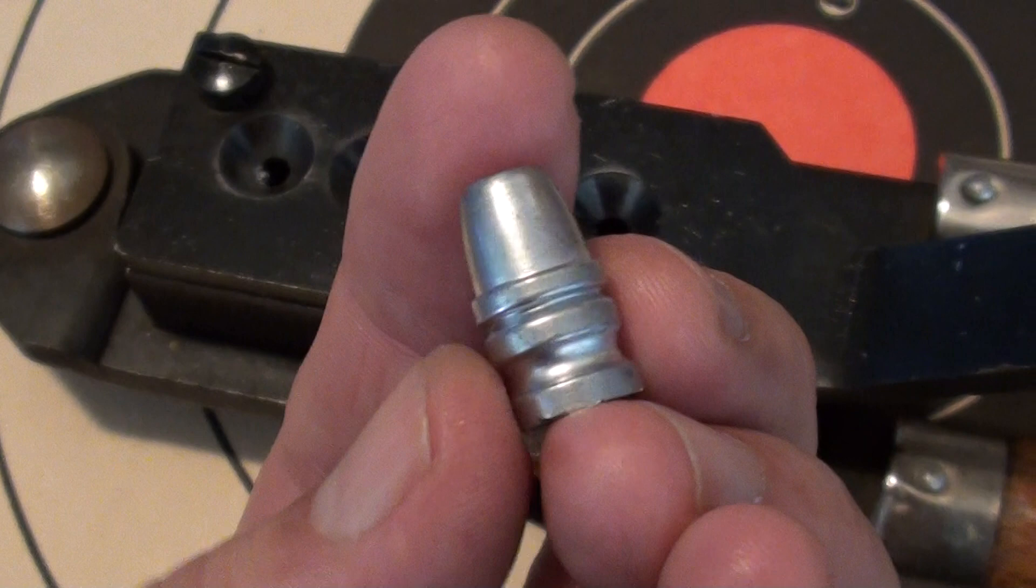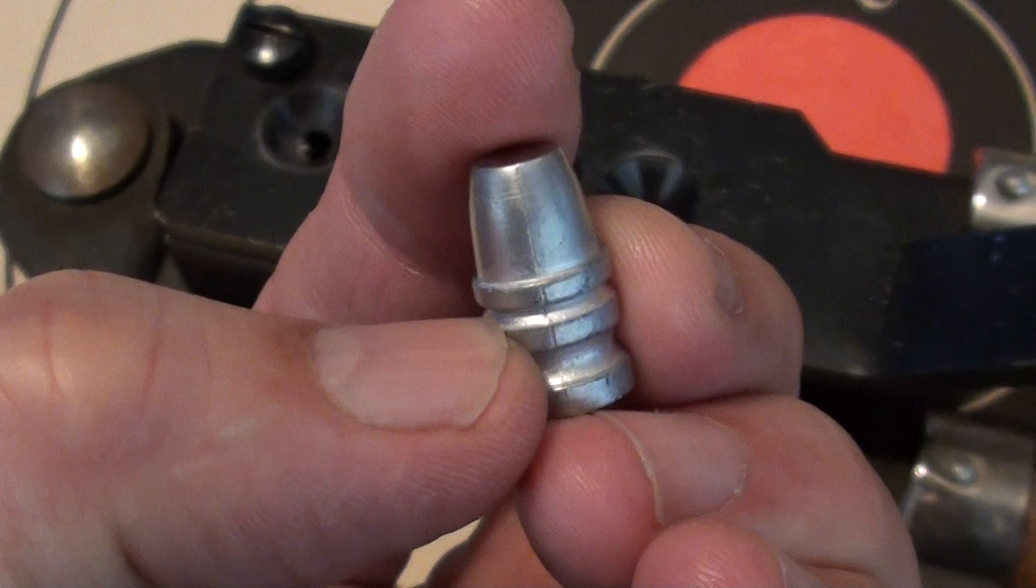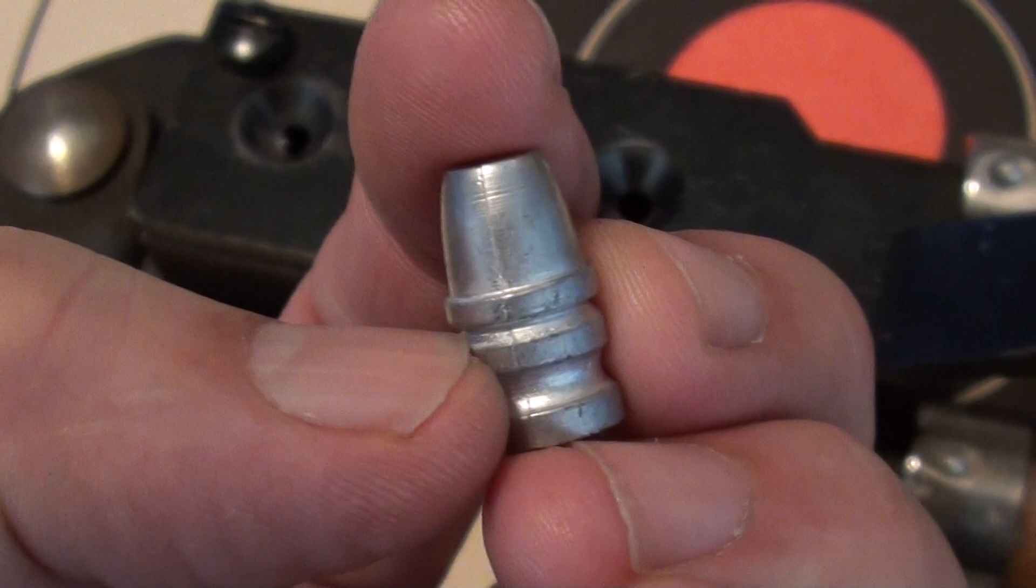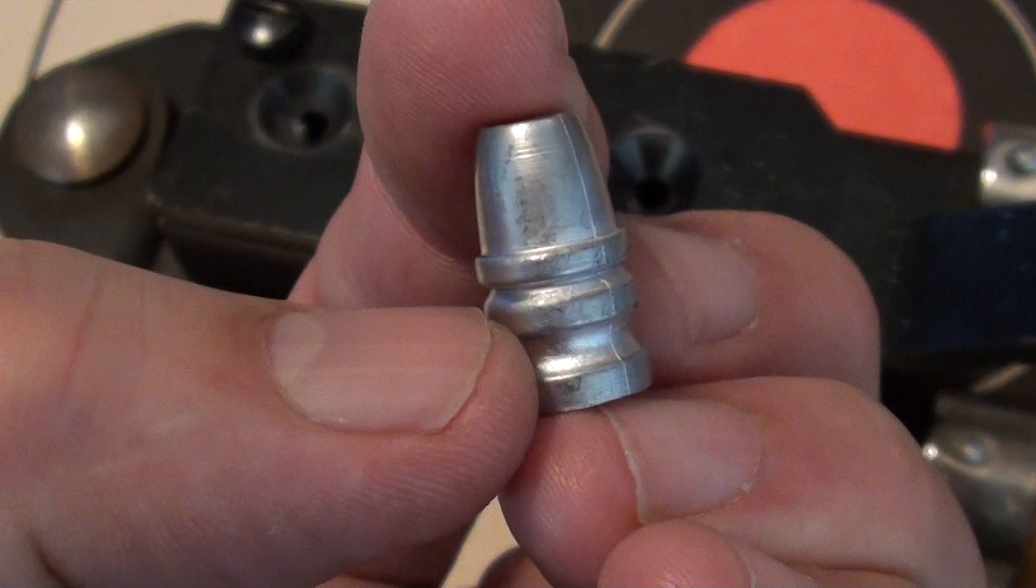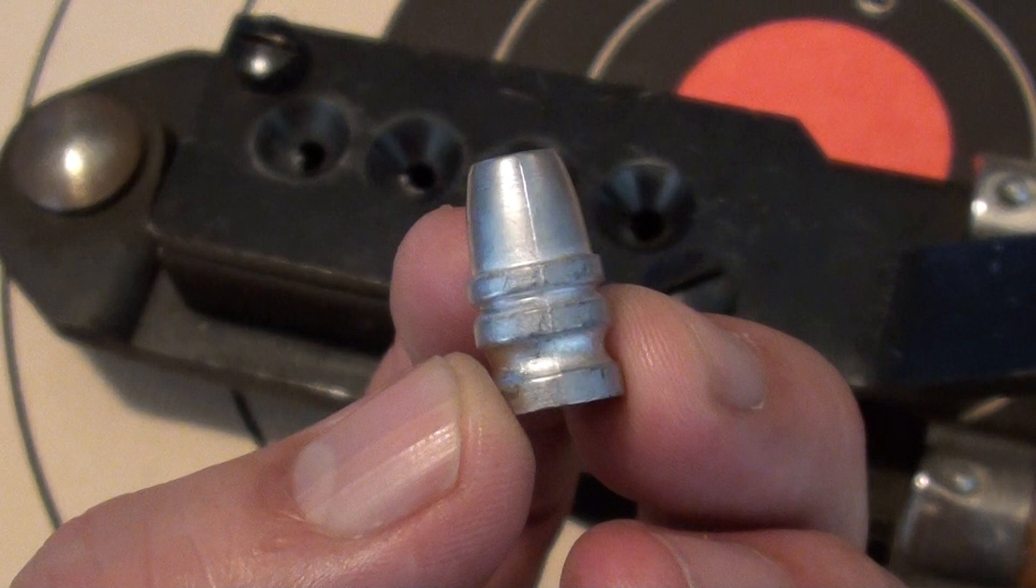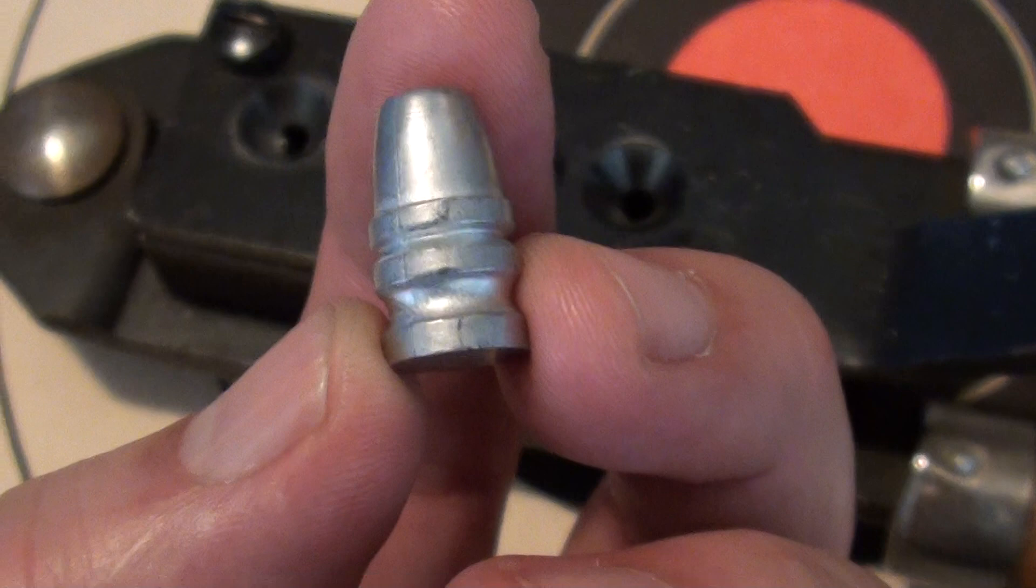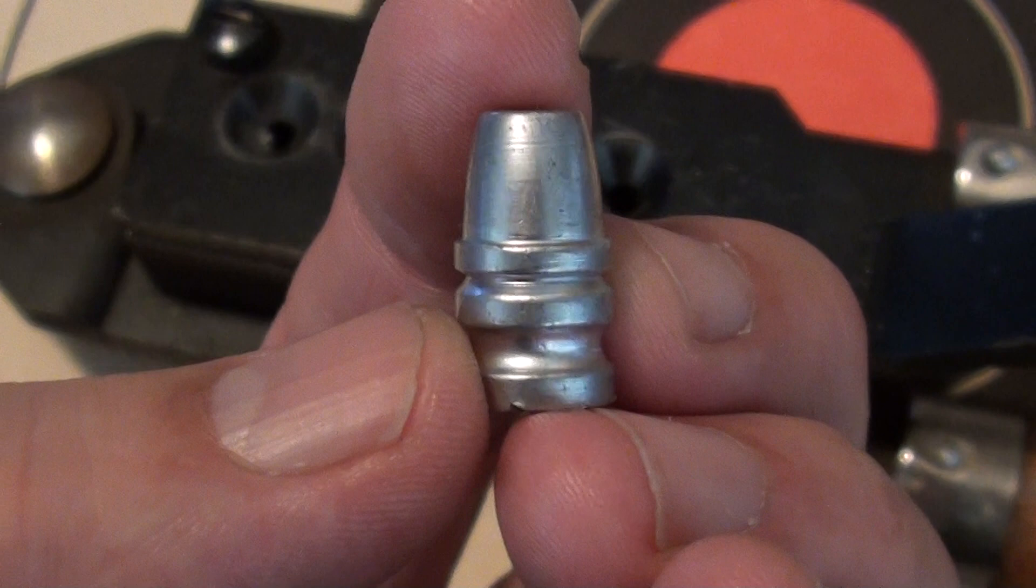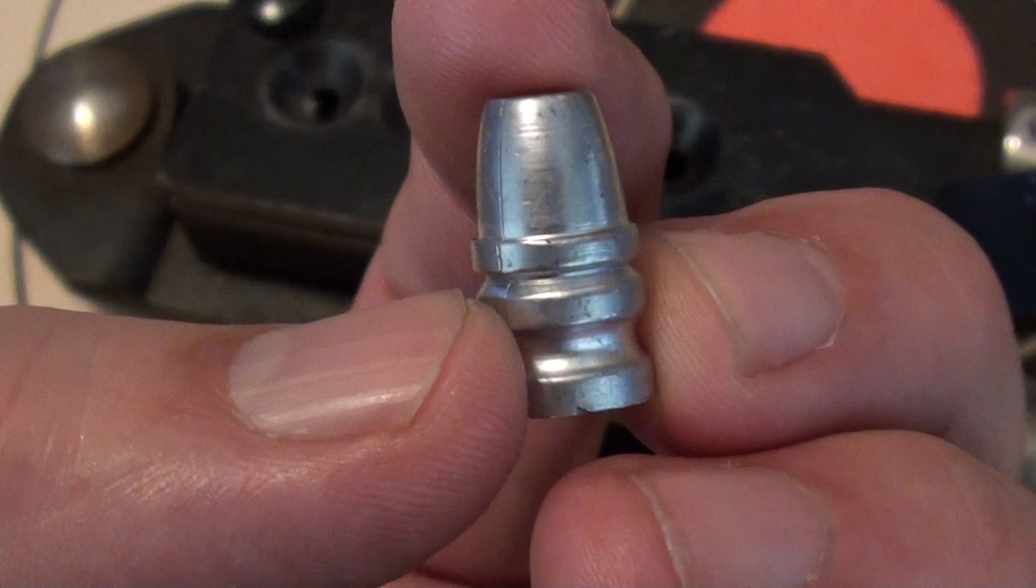The crimping groove is beveled, not round, so this allows a precise crimping point and also fairly deep so that you can get a good strong crimp in there so that when this round is fired, the bullets won't back out the front and tie up the cylinder. Magnums should have a good strong crimp to allow for good consistent ignition of the powder but also to prevent the bullet from forcing forward under recoil.